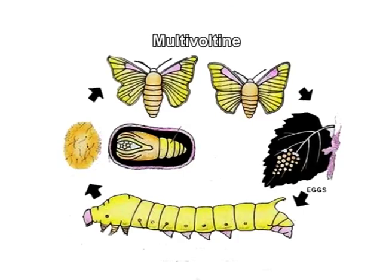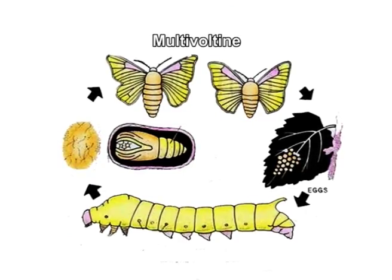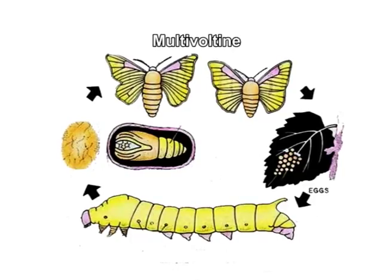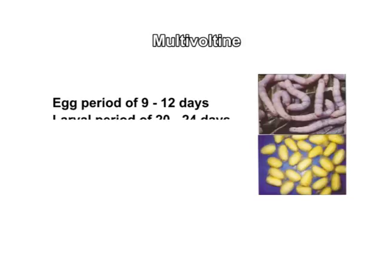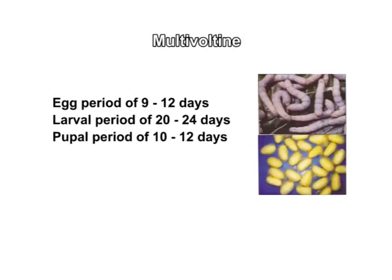Whereas the multivoltine race completes its life cycle early, with the egg period of 9 to 12 days, larval period of 20 to 24 days, pupal period of 10 to 12 days, and adult lifespan of 3 to 4 days. Now let us know about each of these stages in detail.